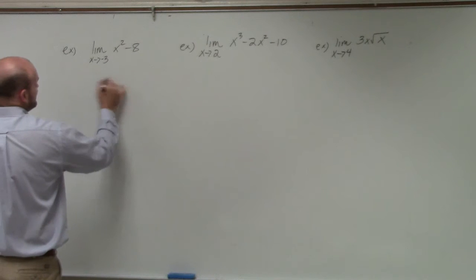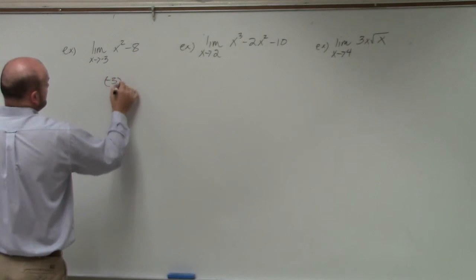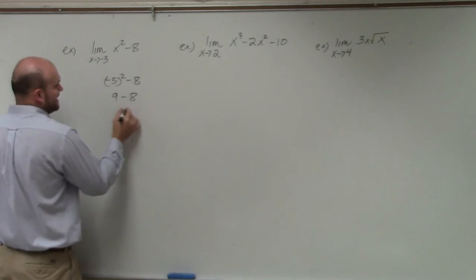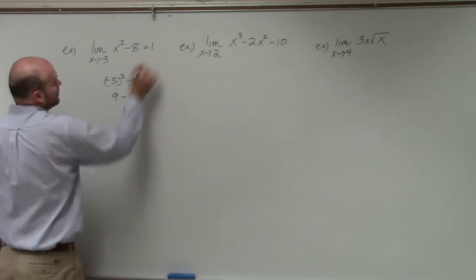So I'll just take negative 3 squared minus 8. Negative 3 squared is going to be 9 minus 8, and that's going to equal 1.